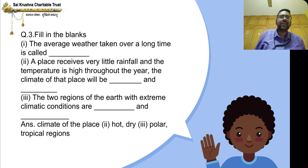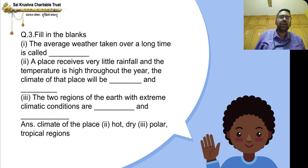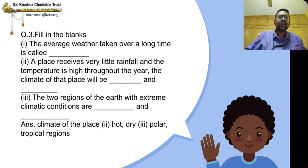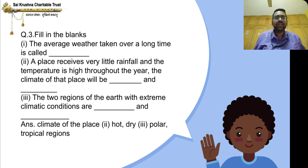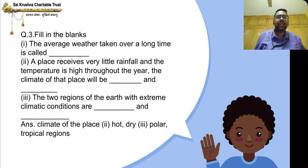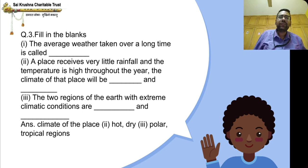Second: A place that receives very little rainfall and has a high temperature throughout the year — the climate of that place will be hot and dry.